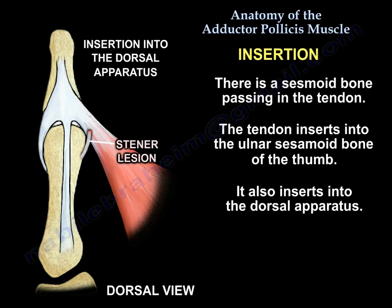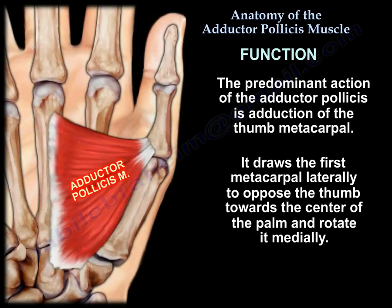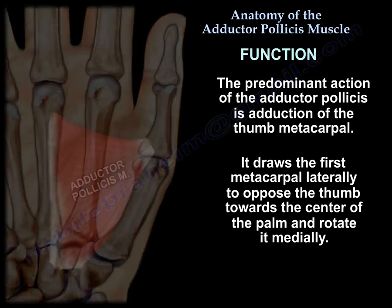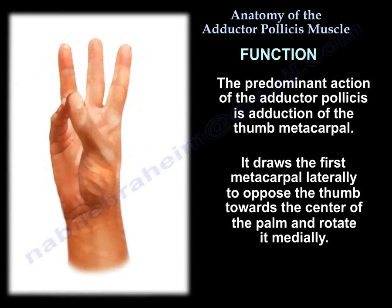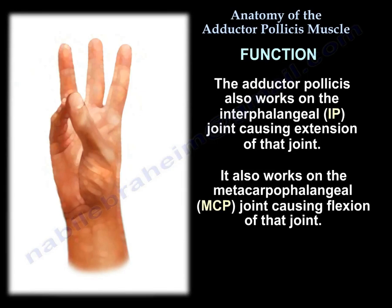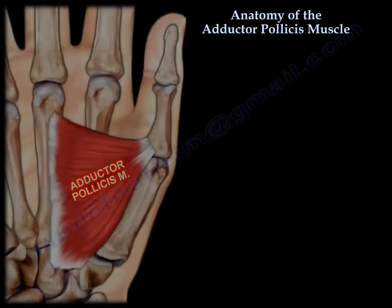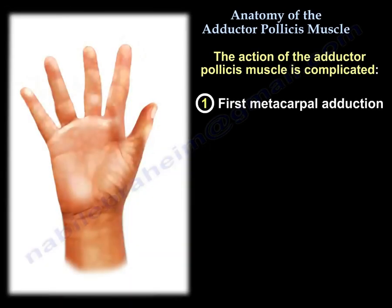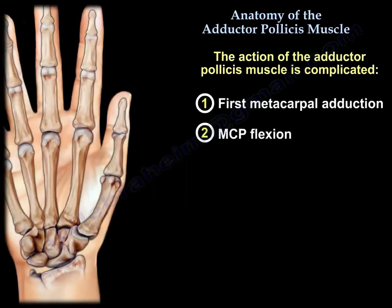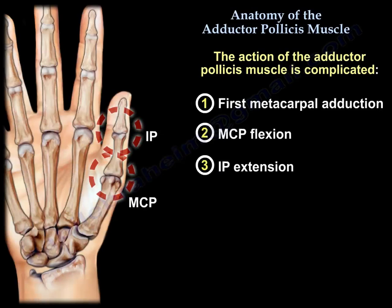Action: the predominant action is adduction of the metacarpals of the thumb — it draws the first metacarpal laterally to oppose the thumb towards the center of the palm and rotate it medially. It also works on the IP joint, causing extension, and on the MCP joint, causing flexion. In summary: the most important action is first metacarpal adduction, second is MCP flexion, and third is IP extension.